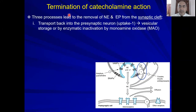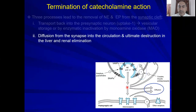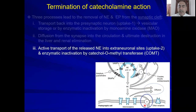First, let's talk about termination. If you remember from the previous lecture, we were talking about biosynthesis of catecholamines. At the end, the catecholamine — mainly norepinephrine — is released into the synapse. Here the norepinephrine has one of three major pathways: either to undergo reuptake into the presynaptic nerve terminal, followed by storage into the presynaptic vesicle, or inactivation by the enzyme monoamine oxidase. The second pathway is to diffuse into the circulation, with ultimate destruction in the liver and renal elimination.